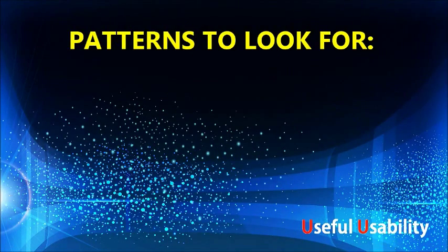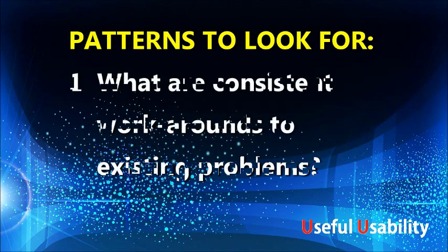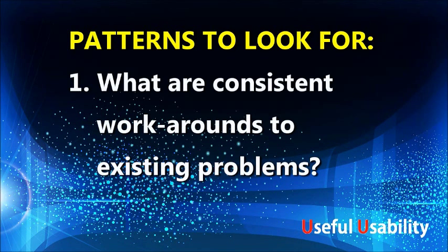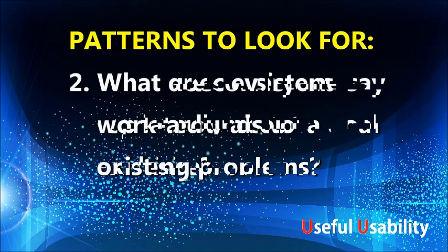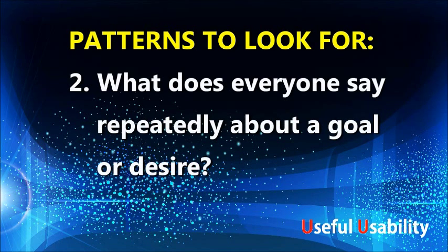Things to look for: Number one, what are consistent workarounds to existing problems? For example, does everybody share the same kind of workaround for something that should be working but apparently isn't? Number two, what does everybody say repeatedly about a goal or desire? If you're hearing the same things over and over again, using the same terminology especially, make sure that you note that.